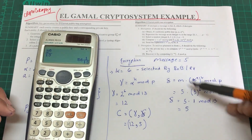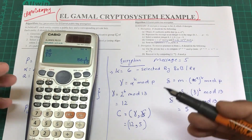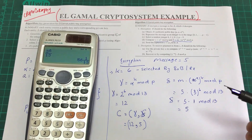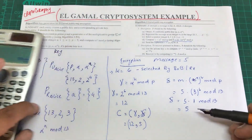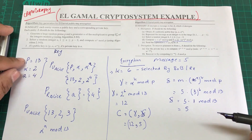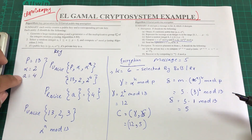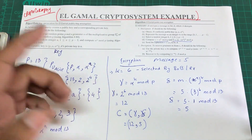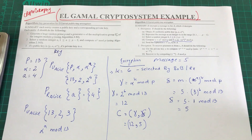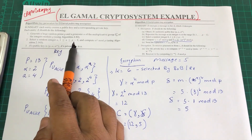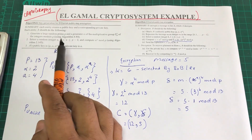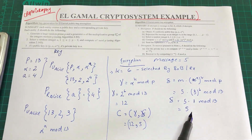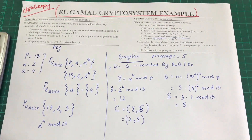Coincidentally, the delta value turns out to be 5, which is the same as the original message. This isn't supposed to happen in general — it's because our number space is very small. The value of a and k are selected from 1 to 11 (since p = 13), so there are very few values to choose from. With larger prime numbers, the ciphertext values would differ significantly.